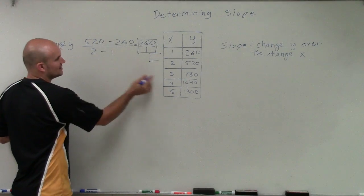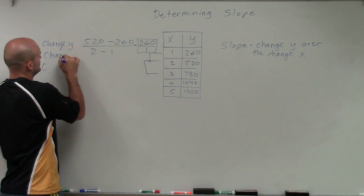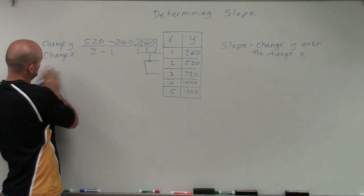So we have 260 over 1. Now let's take a look at the next two points. How about 3 and 2? The change in y over the change in the x.